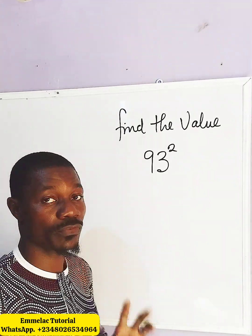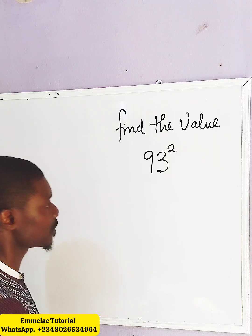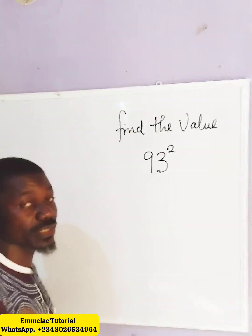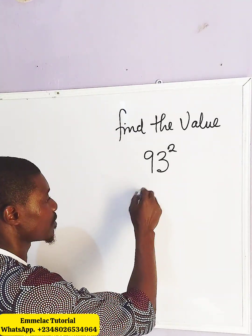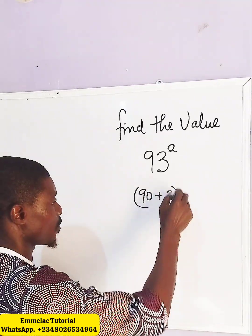Find the value of 93 raised to the power of 2 without the use of a calculator. Now let's do this. First of all, let's split 93. You have 90 plus 3, then raise it to the power of 2.